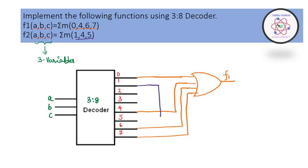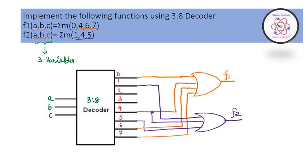Similarly, for function F2 with three input variables ABC, since the function is mentioned in terms of min terms, I need to combine them using the OR gate. In this case, I combine the decimal notations 1, 4, and 5, indicated using a different color. This completes the implementation process.